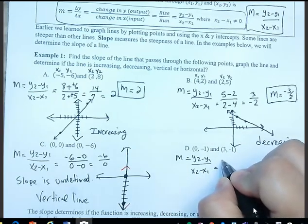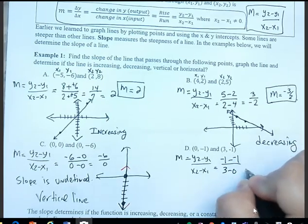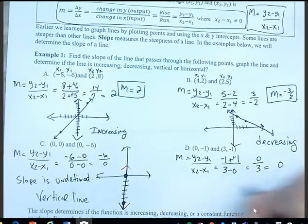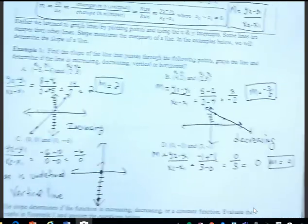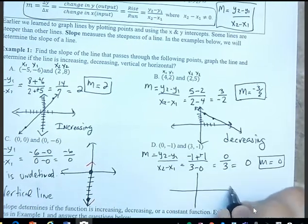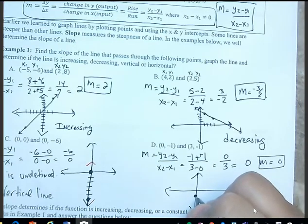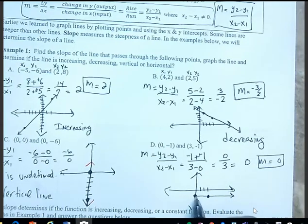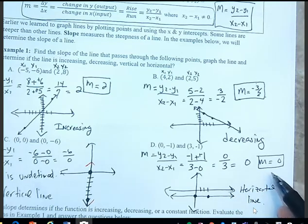For part d, y₂ is negative 1 minus negative 1, divided by 3 minus 0. We get 0 divided by 3, which is 0. So my slope is 0. Graphing the line using points (0, negative 1) and (3, negative 1), we get a horizontal line, and the slope is 0.